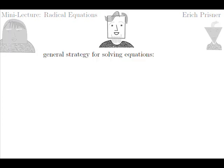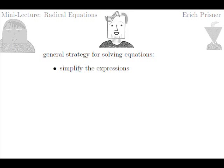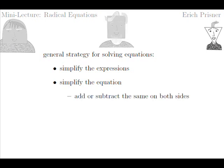Does anybody remember our general strategy for solving equations? We try to simplify both expressions on the sides of the equation, but we also try to simplify the equation itself. We can add or subtract the same on both sides, and we can also multiply the same on both sides.